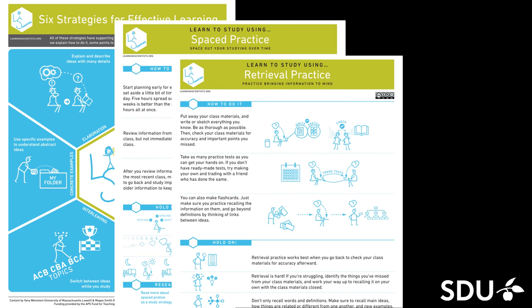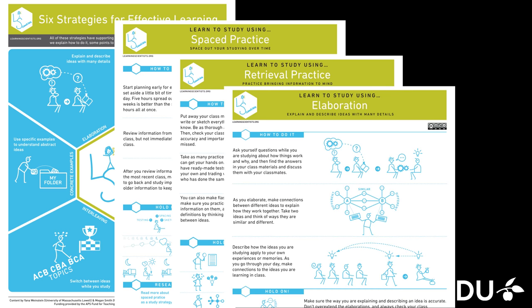The other study strategy is what is known as retrieval practice. It basically means that you need to put away all your class materials, your notes and so on, and then try to write or sketch down what you know about a subject. Then go back and grade that somehow — check the accuracy using your textbook or something like that. And finally the strategy about elaboration: to explain one idea and then try to relate that to similar or different ideas, and put your own words on a topic more or less. These three different study strategies I have combined into what I call a mini test.